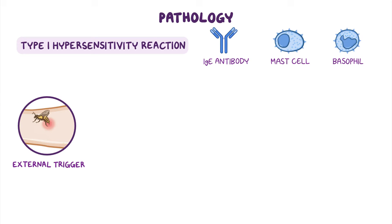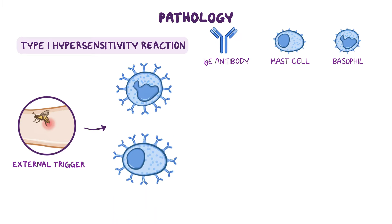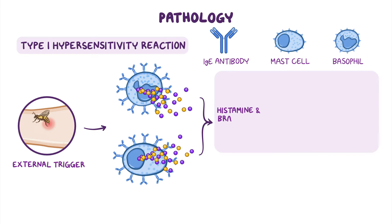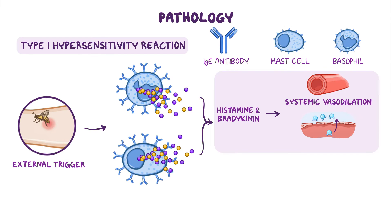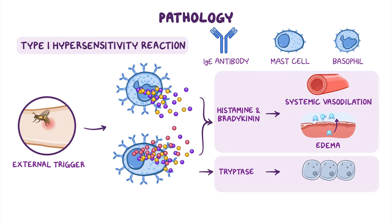Once an external trigger reaches the body, it binds IgE antibodies and stimulates mast cells and basophils to degranulate and release vasoactive mediators, such as histamine and bradykinin, that eventually cause massive systemic vasodilation. Histamine also increases vascular permeability, allowing fluid to shift from the intravascular compartment into the interstitial compartment, subsequently causing edema. In addition to histamine, mast cells also release an enzyme called tryptase, which breaks down proteins and causes local tissue damage.